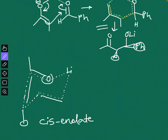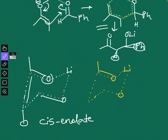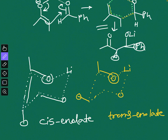For the trans enolate, draw the six-membered chair-like transition state with lithium and the two oxygens. For the trans enolate you have to put the methyl group equatorial, because that is how you make the oxygen and the methyl on opposite sides. This is a key distinction for the trans enolate.